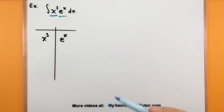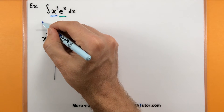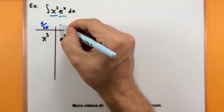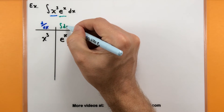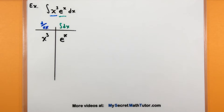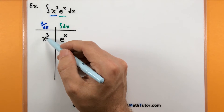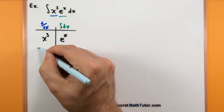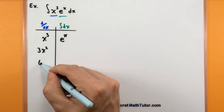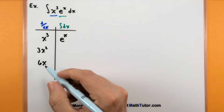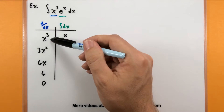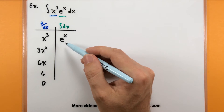The derivative piece will go on the left side, so x cubed, and the anti-derivative piece will go on the right side. Just to keep these two organized, I'm going to write a little d/dx on the left column and an integral symbol on the right column, so I know I should be taking derivatives on this side and anti-derivatives over here. On the left side, we're just going to start taking derivatives: the derivative of x cubed is 3x squared, the derivative of 3x squared is 6x, the derivative of 6x is 6, and the derivative of 6 goes to 0.